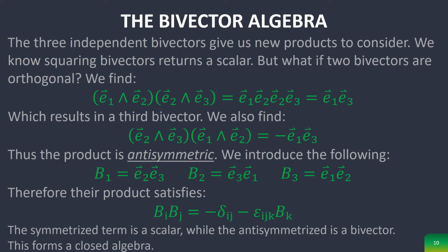So we have considered how bivectors square to give a scalar. But what if two bivectors are orthogonal to each other? We find that it produces a third bivector, and that their product is anti-symmetric.